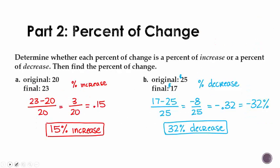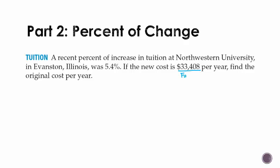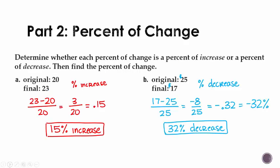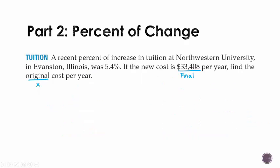We don't know our original, so we'll make it X. If we look back at these equations, what we did every time is we took final minus original divided by the original. So let's write this up here. Final minus original divided by original. This equals our percent.